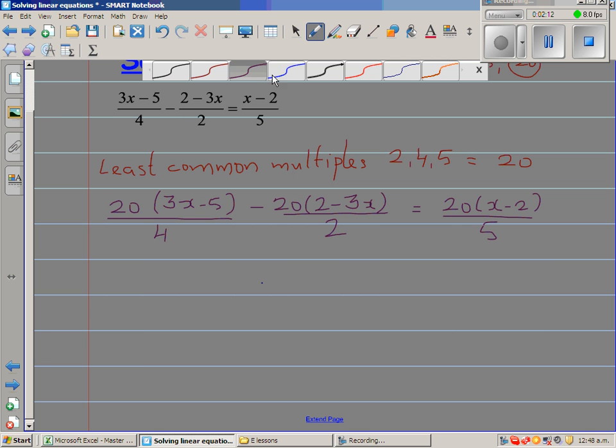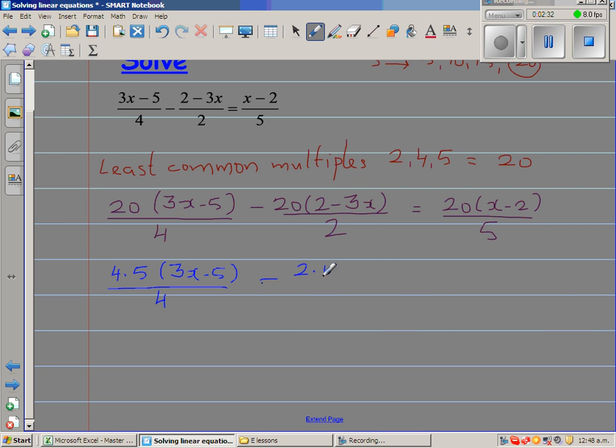The next step: I'm going to write this 20 as 4 × 5, so this is 4 × 5 × (3x - 5)/4. This 20 I'm going to write as 2 × 10, so this is 2 × 10 × (2 - 3x)/2.